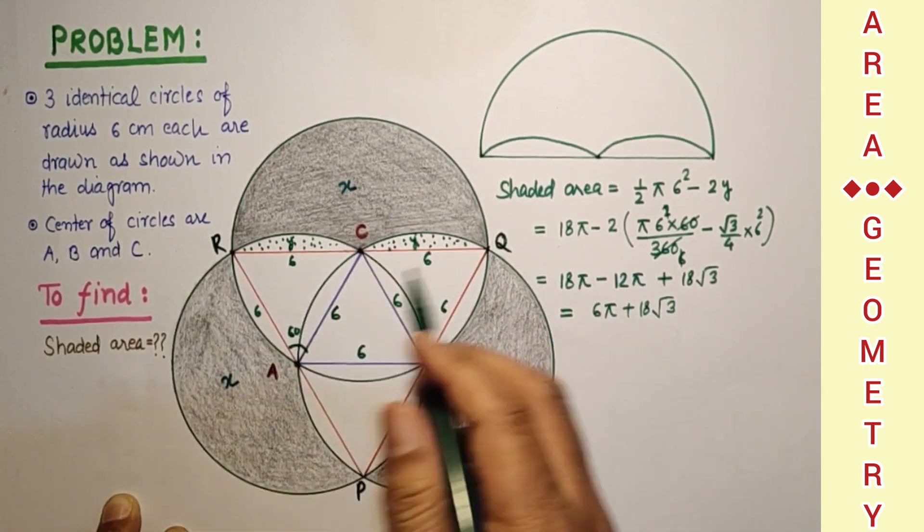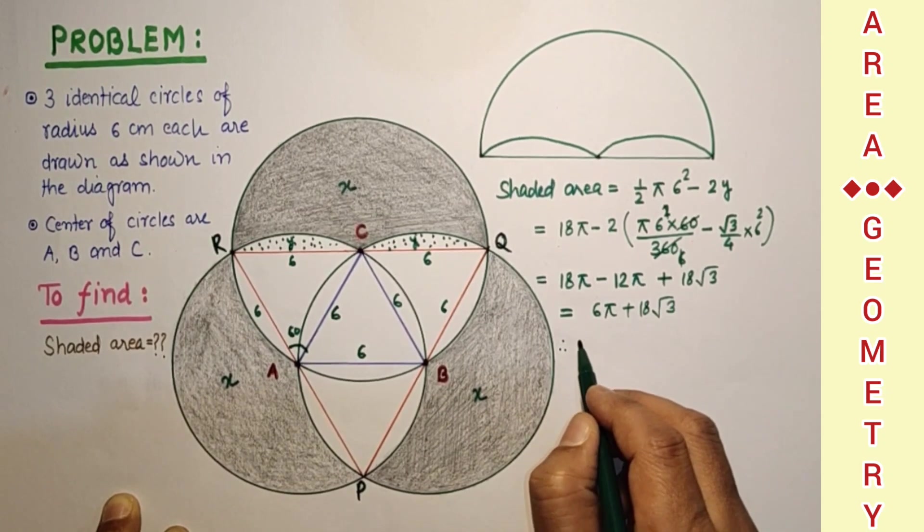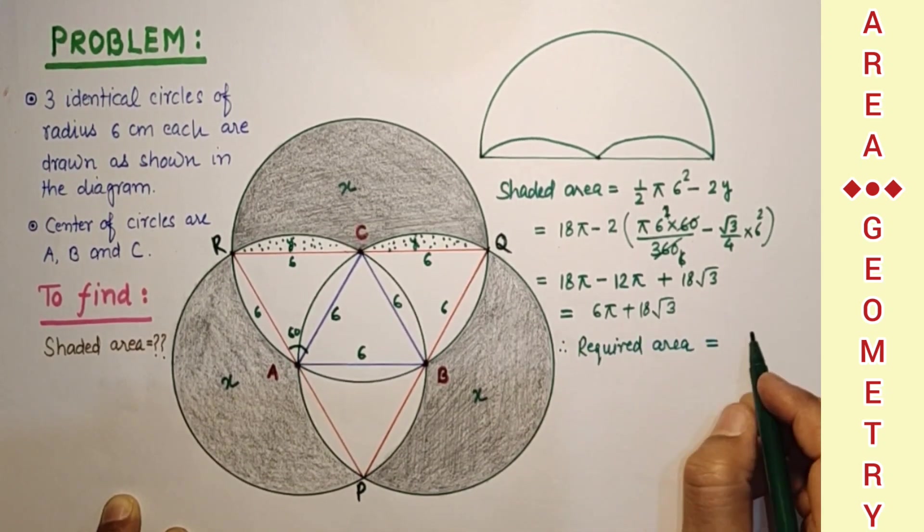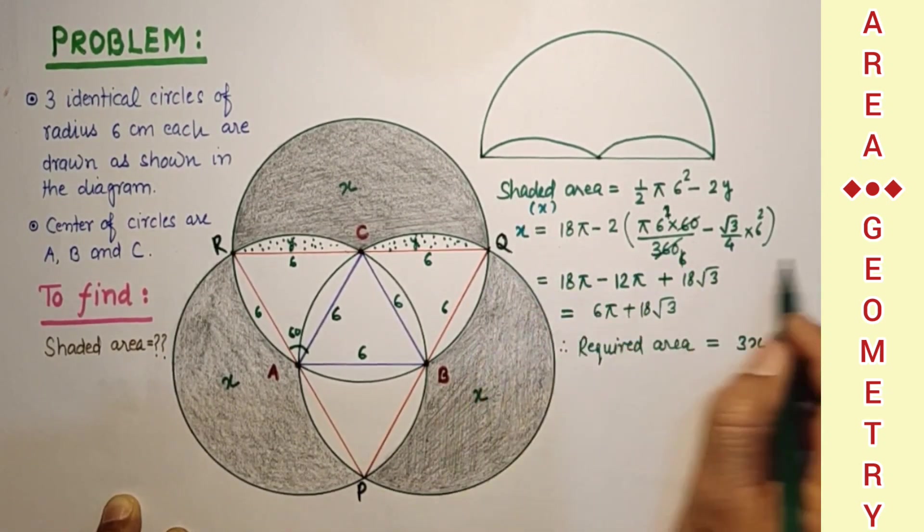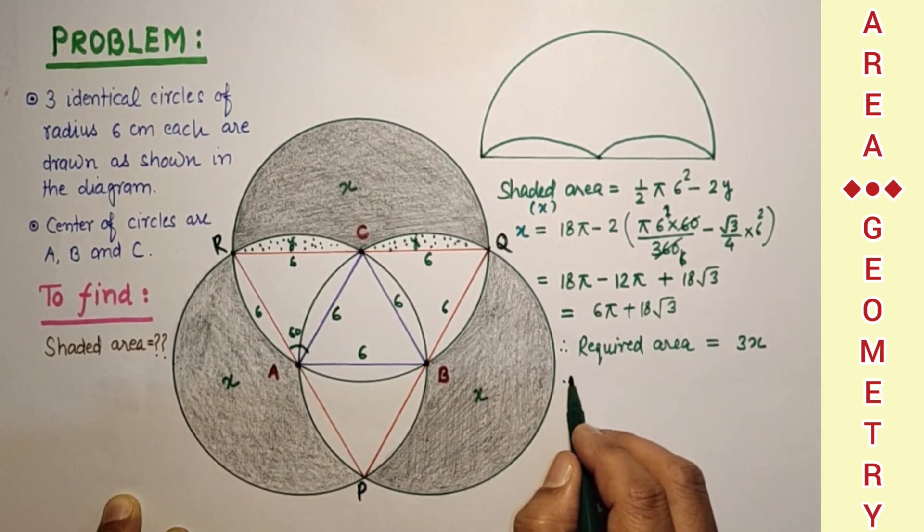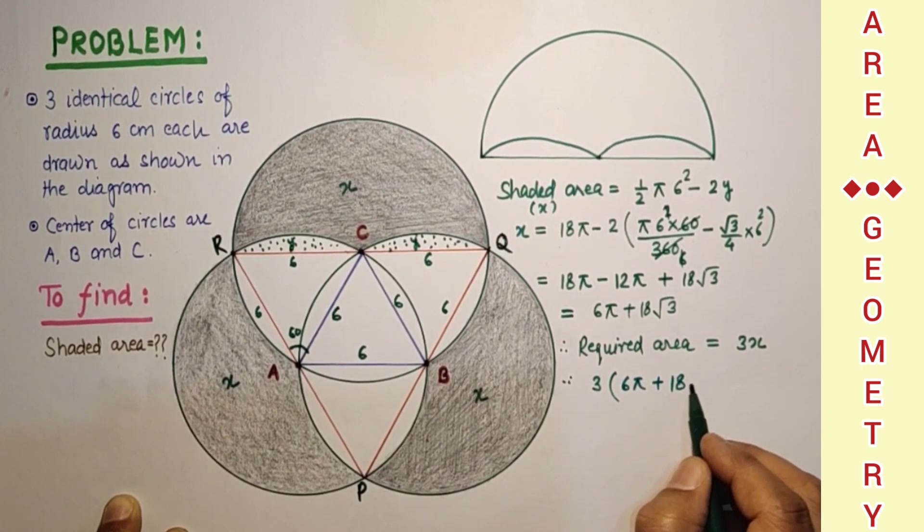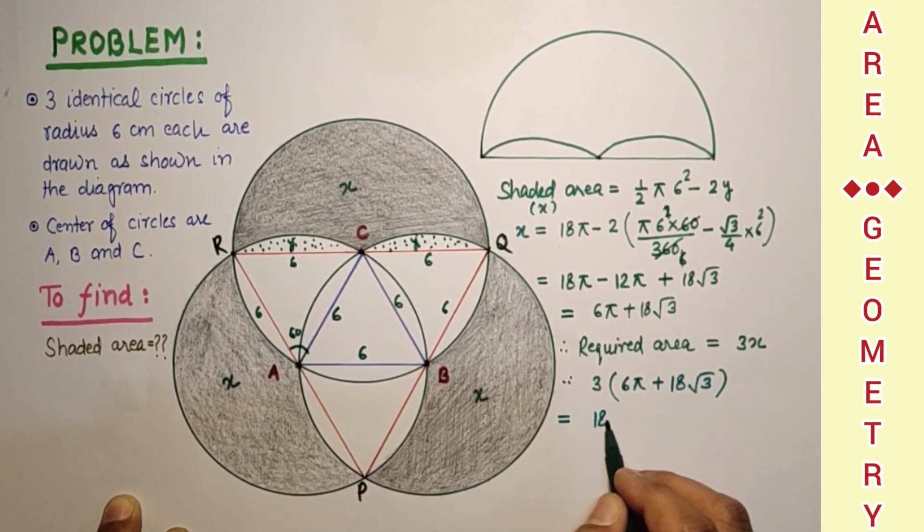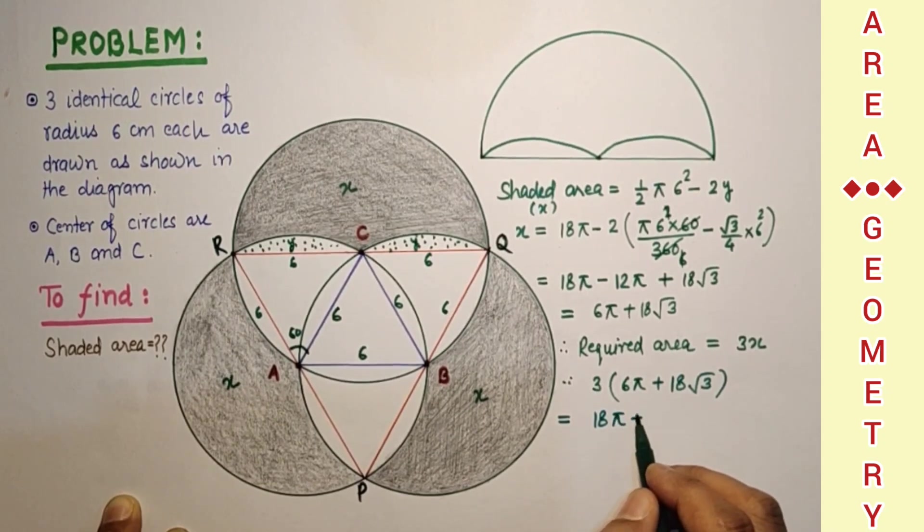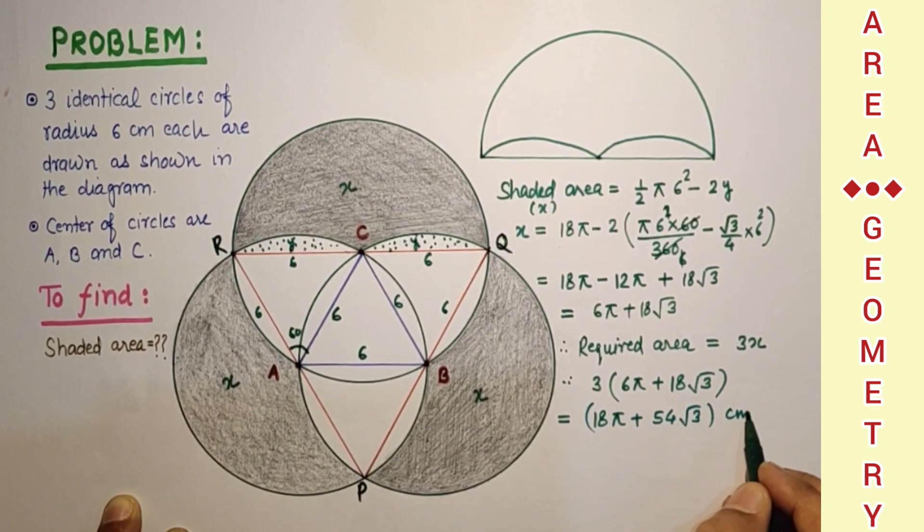Required shaded area is equal to 3x. And shaded area x is equal to this. So therefore 3 into 6 pi plus 18 root 3. That we found 18 pi plus 54 root 3 centimeter square.